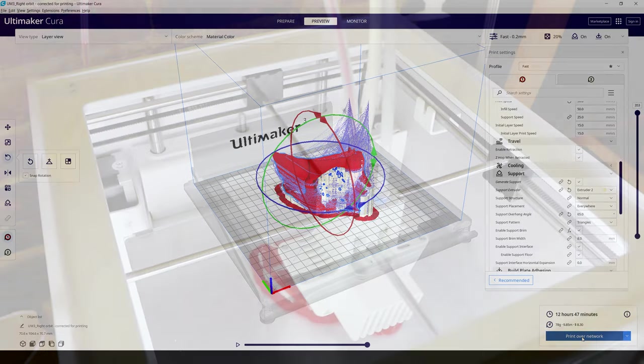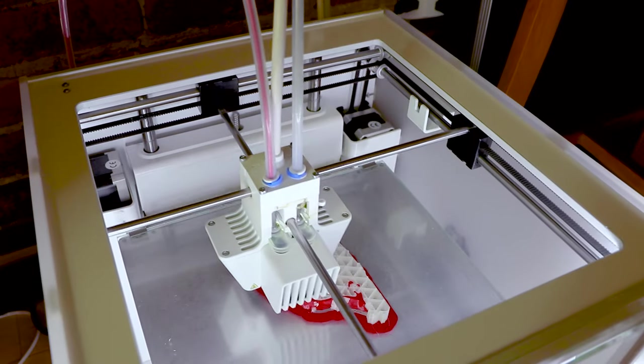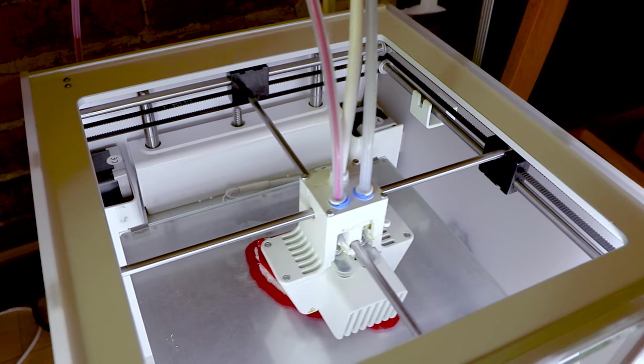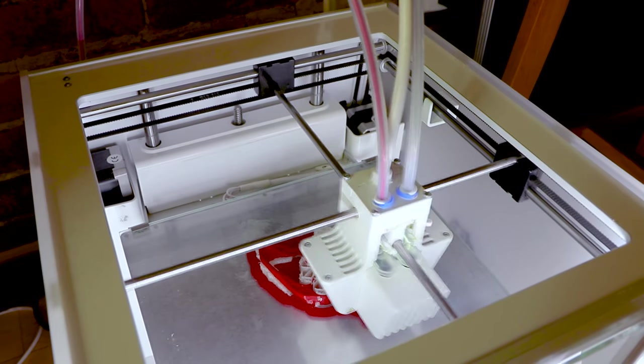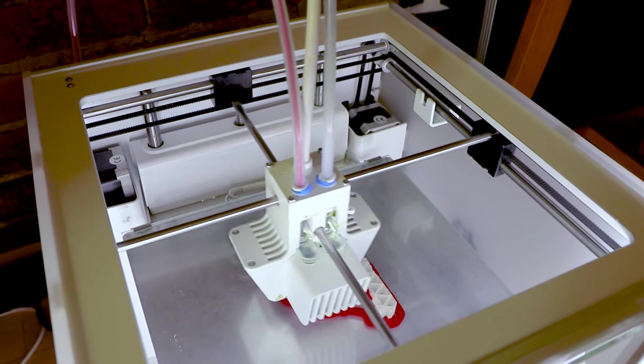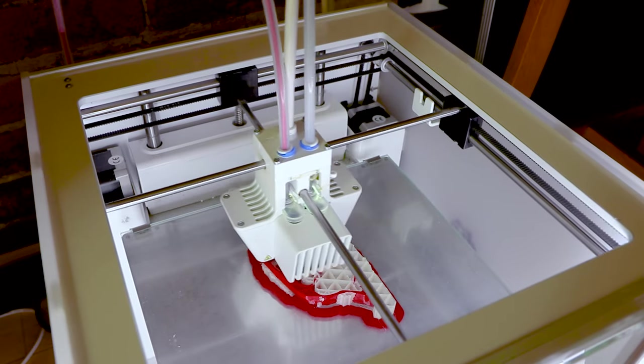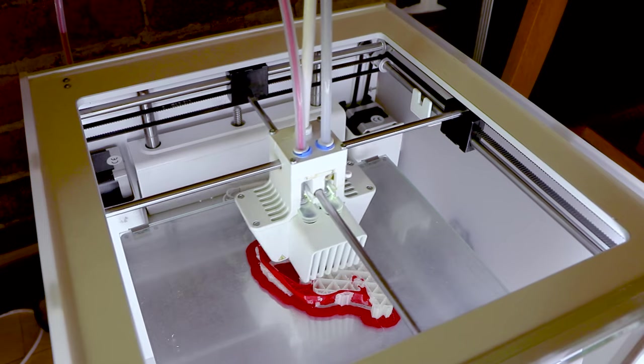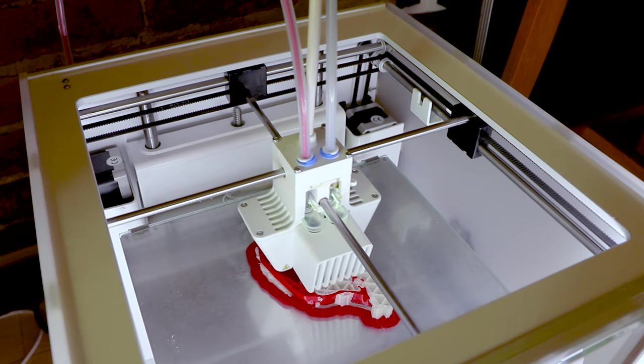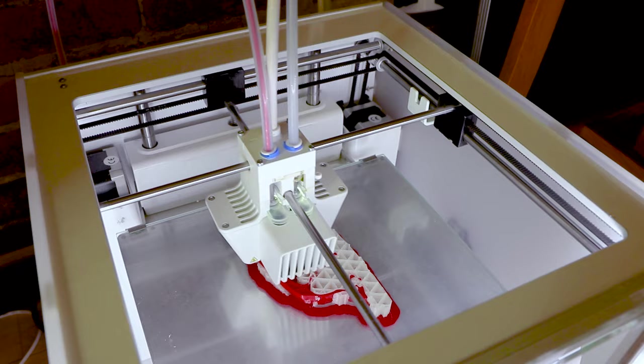We can see here the model that's being printed in red plastic with the supports that are in clear plastic. The head of the printer is moving and laying down very thin layers of red plastic that will eventually become the model. It's also laying down thin layers of clear plastic that will become the supports.